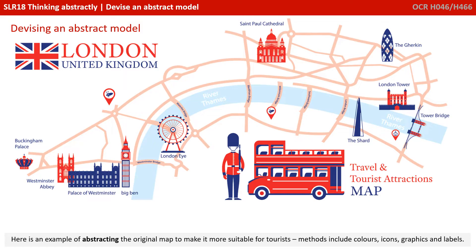Let's see how you did. Here's an example of abstracting the original map to make it more suitable for tourists. This method is including colours, icons, graphics and labels. Clearly, there are thousands of different abstractions you could use, and depending how far you wanted to go would depend on how different from the original image it looked. But they're all serving a specific purpose.